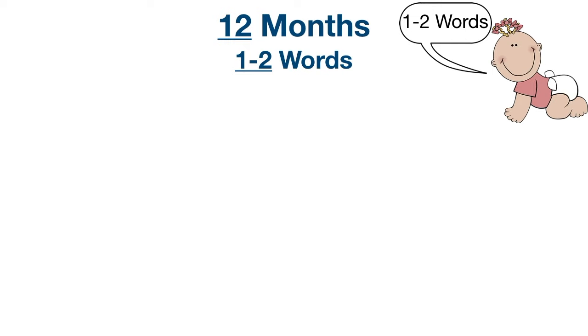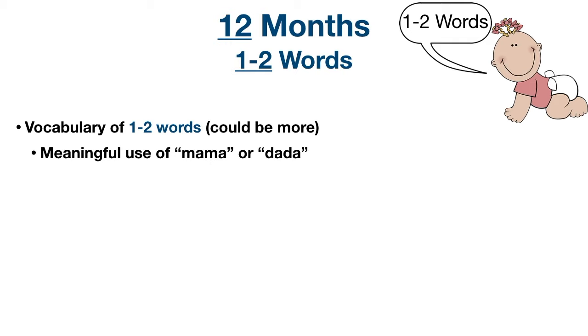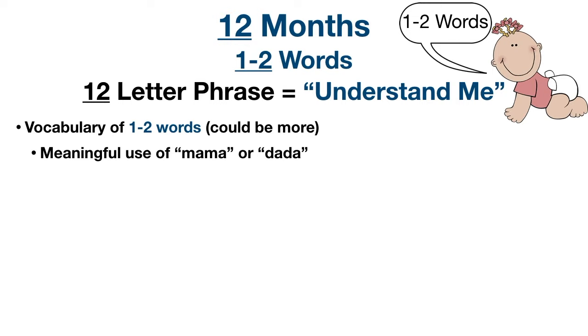Next is 12 months. Using the age, we take the one and two in 12 to remember 'one to two words.' By 12 months the child can usually say one to two words in addition to mama and dada, and their vocabulary could be even larger. Their use of mama and dada now has more meaning — during the babble phase these were said without meaning, but by 12 months they start to bring meaning to it.